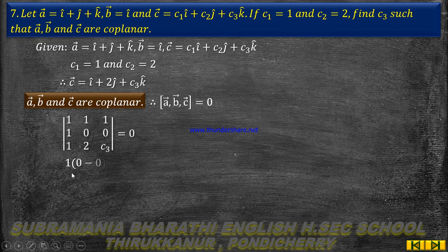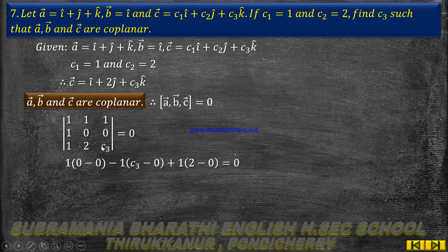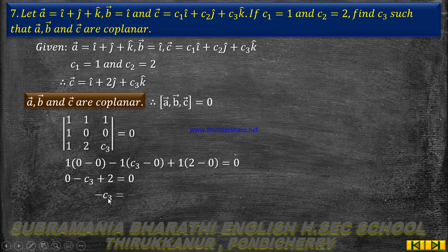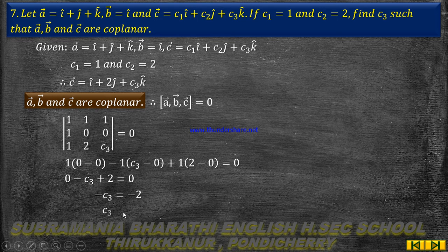Determine and find it. 1 into (0 minus 0), that's the second value is negative, so minus 1 into (1 into C3 minus 1 into 0), that value is positive, 1 into (1 into 2 minus 1 into 0), equal to 0. So simply 1 into 0 minus 0 is 0. The value of minus 1 into C3. The value of 1 into 2 plus 2 is equal to 0. So minus C3 plus 2 is equal to 0.